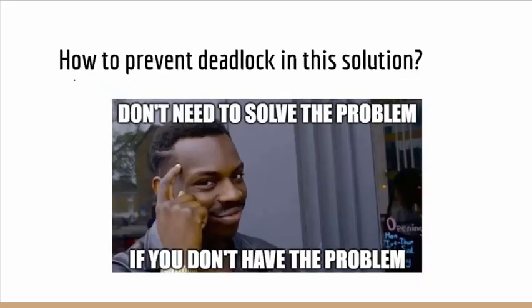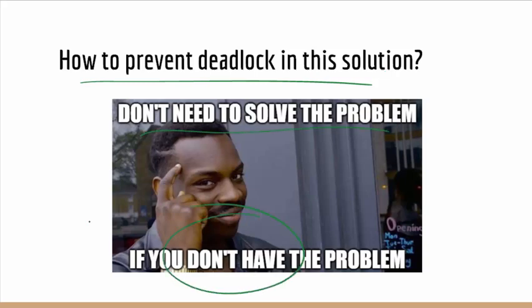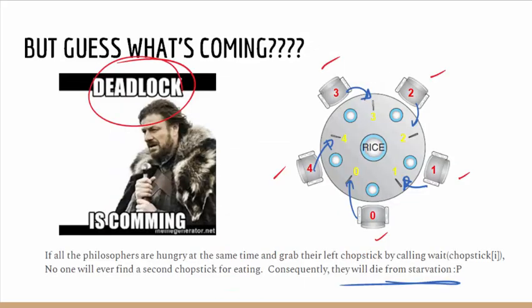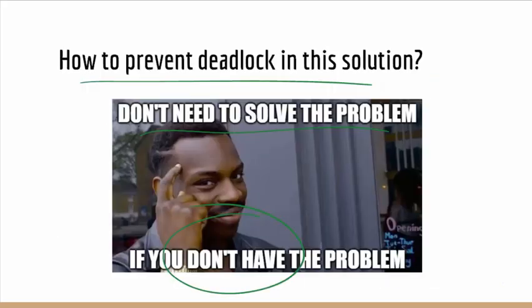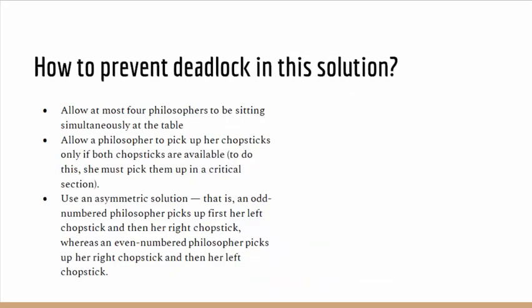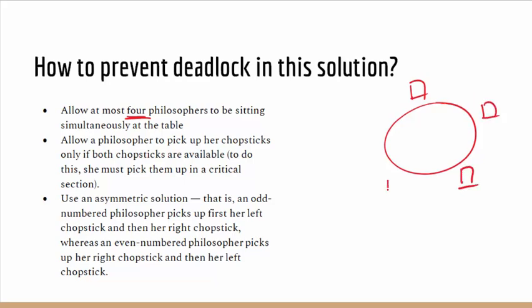How to prevent deadlock? You don't need to solve the problem if you don't have the problem. So, I am going to see how to prevent deadlock. The first solution is to allow at most four philosophers to be sitting simultaneously at the table. This means our table has a past position — five zones but only four philosophers allowed.